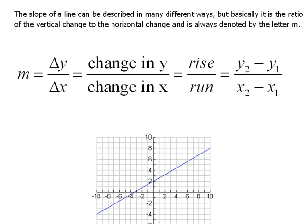The slope of a line can be described in many different ways. So I have several different things written out here, but the thing that we need to keep in mind is that it is always the ratio. Well, what does the word ratio mean? Ratio is like a fraction, right? It's the ratio of the vertical change to the horizontal change. And we always use the letter m to represent slope.